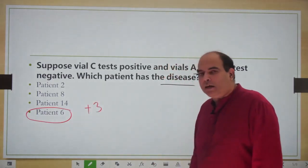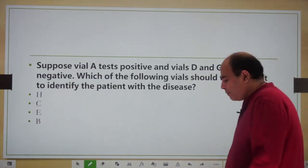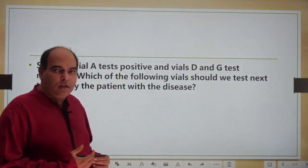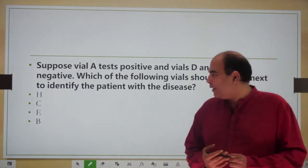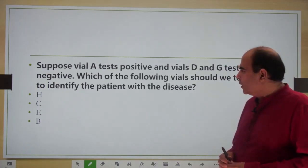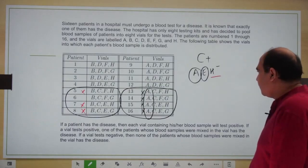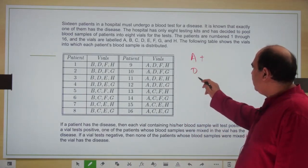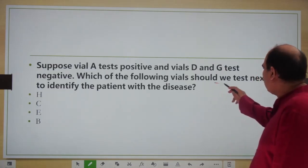That's plus three marks in CAT 2020, maybe one minute maximum for that question. In the DILR section, six to seven questions was what good students did, and we've got 40 minutes — this set is three to four minutes. Let's look at the next question: suppose vial A tests positive and vials D and G test negative. Which of the following vials should we test next to identify the patient with the disease?